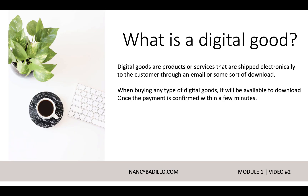So what is a digital good? Digital goods are products or services that are shipped electronically to the customer through an email or some sort of download. When buying any type of digital goods, it will be available to download once the payment is confirmed within a few minutes. It's important to realize that when you're selling digital goods, obviously the customer is not going to get anything tangible through the mail — they will get an instant download that will be available once the payment clears.